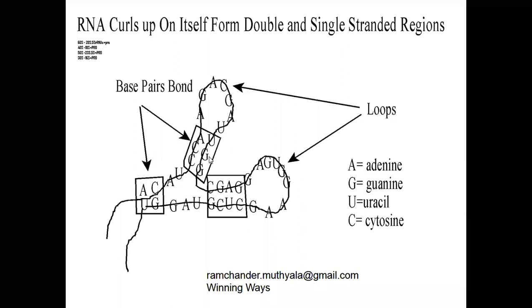The single-stranded polynucleotide chain of rRNA has a main function: formation of polypeptide chains between the two amino acids. During the translation mechanism, this is the major function of rRNA.